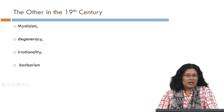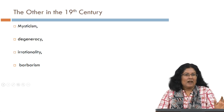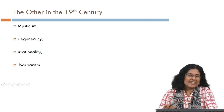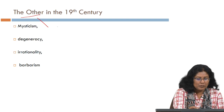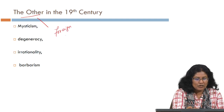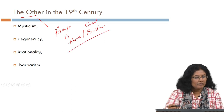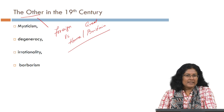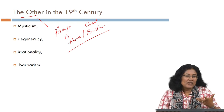I want to first talk about the 'other' in the 19th century — the figure of the other. How did 19th century British society look at the foreign or the other? The other is another word for the foreign, something that is not home, which usually means Great Britain. In 19th century British fiction, the other is usually associated with mysticism, something mysterious as well as spiritual, something that we cannot understand quite easily.